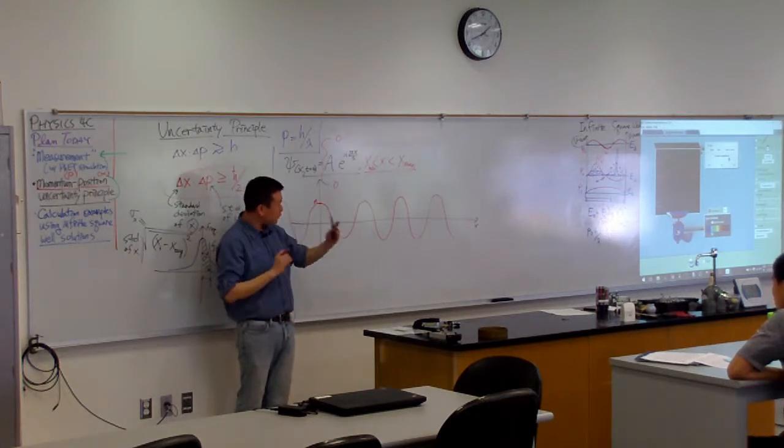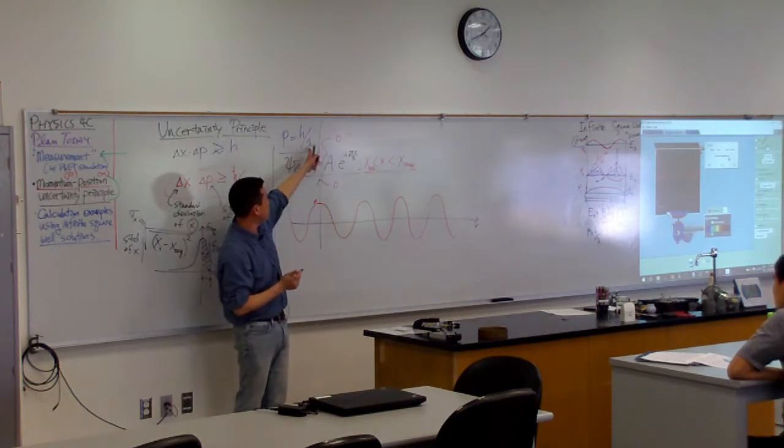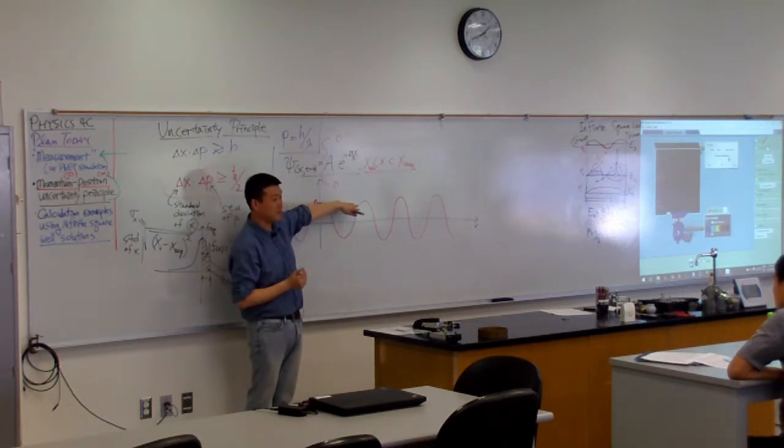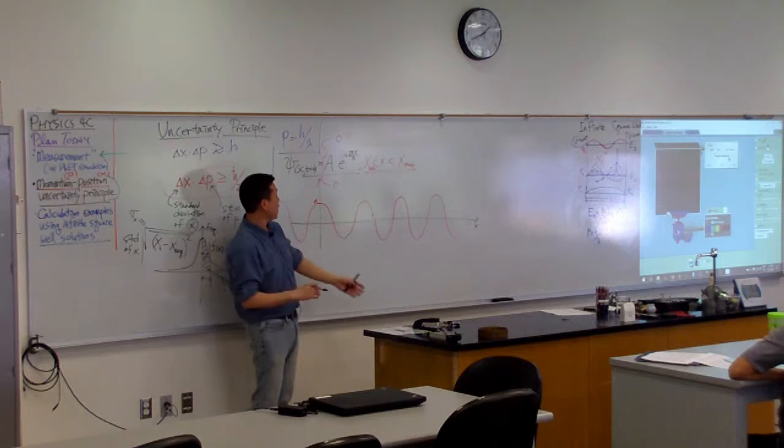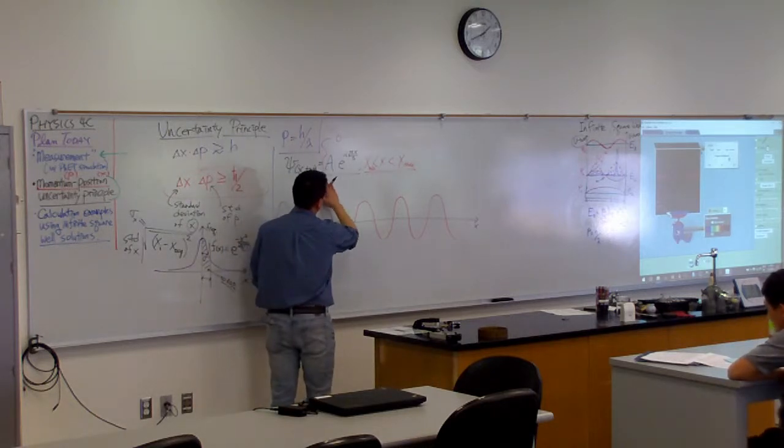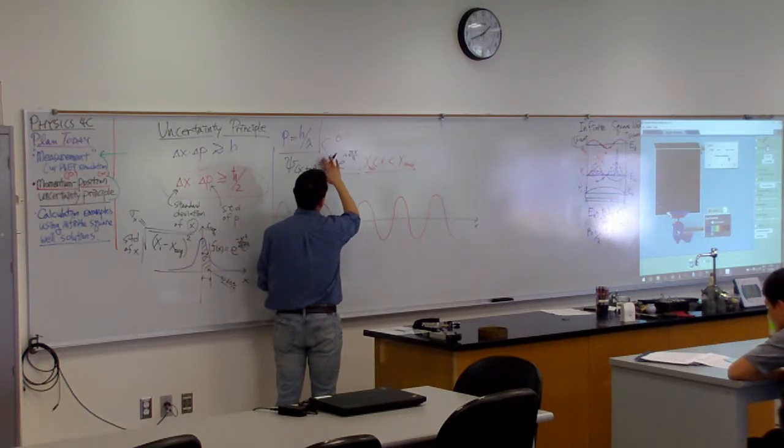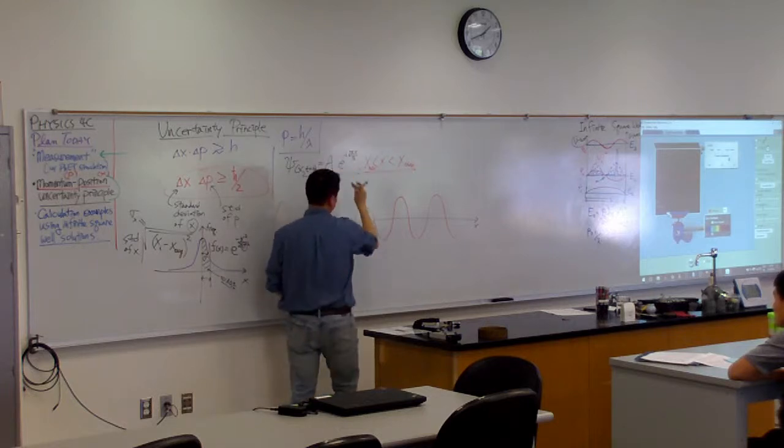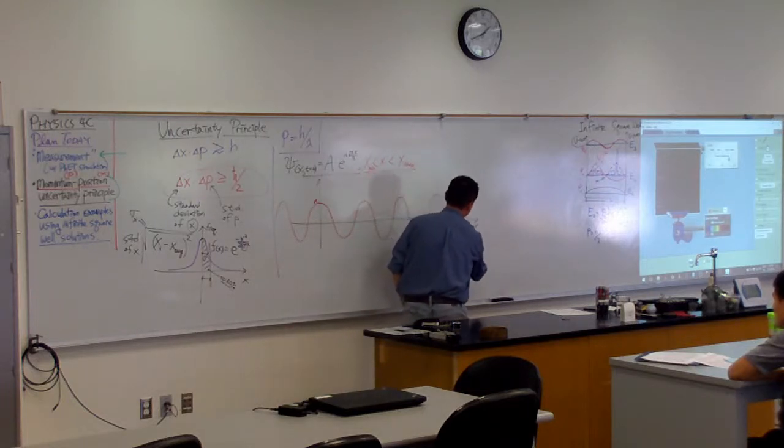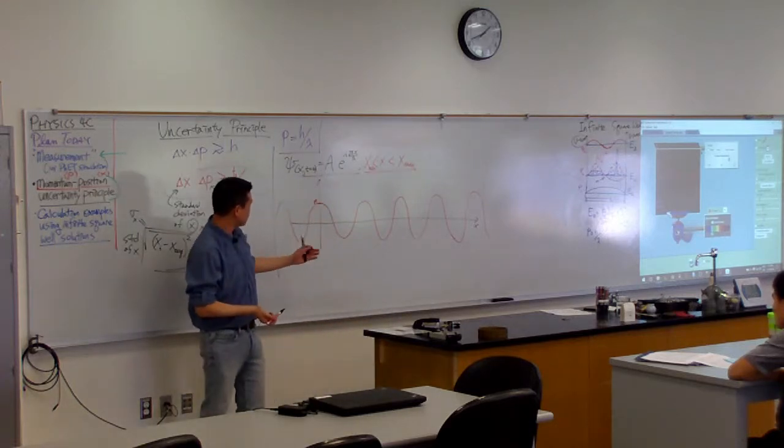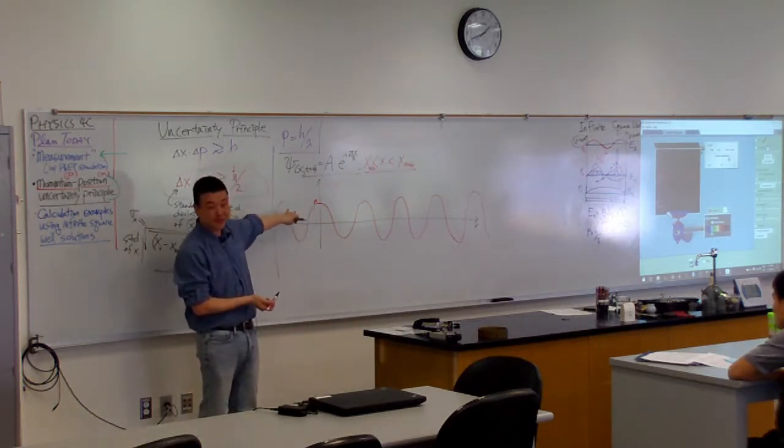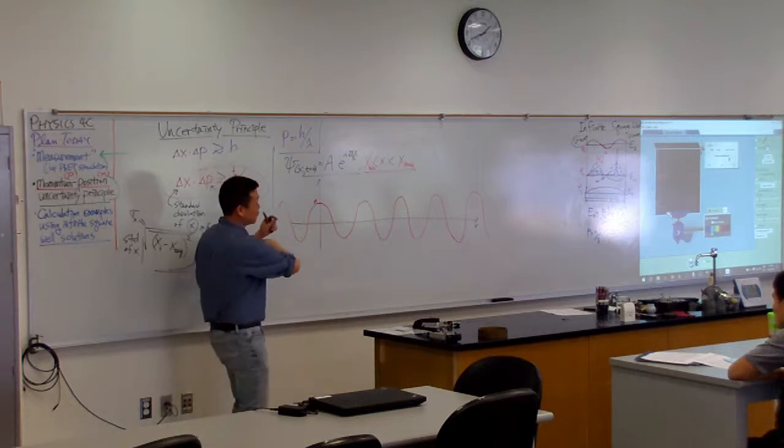So, the function that has precisely defined the wavelength is not this. You cannot limit it to spatial distribution. You have to let it roam freely from negative infinity to positive infinity. So this is what you have. Because of spatial limitations, I stopped, but it's supposed to go on forever.